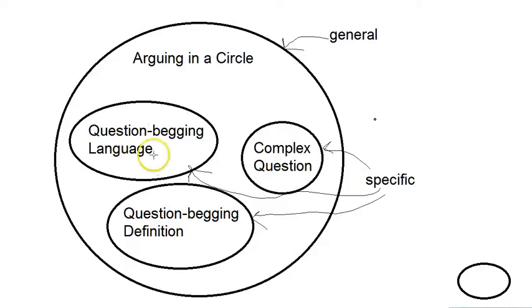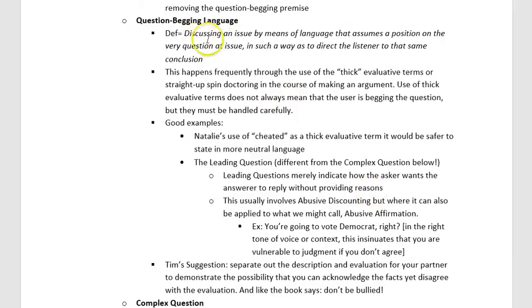That's a good example of arguing in a circle in a more subtle way: in order for the argument being presented to work, it relies on the conclusion already being posited as true. This problem can take an even more subtle version, which comes into question-begging language — the one I want to talk about next.